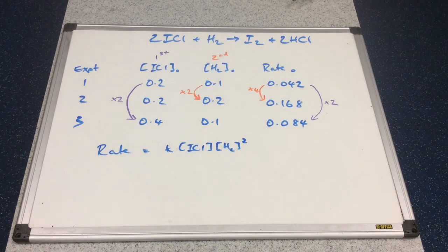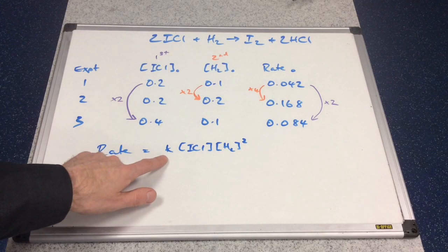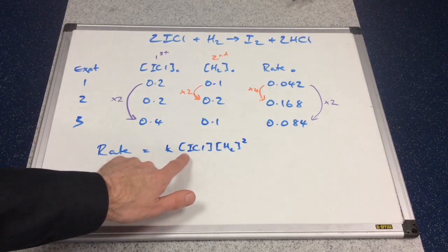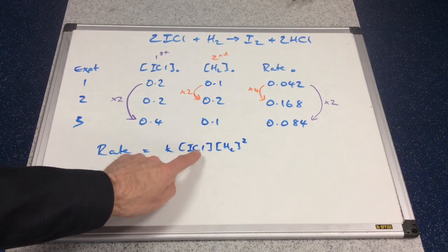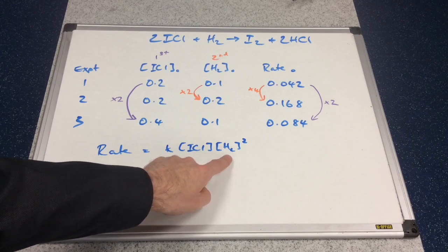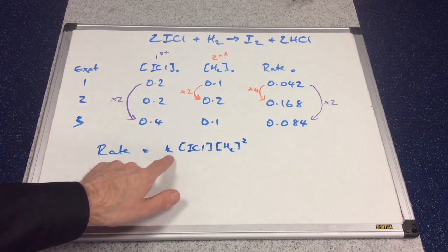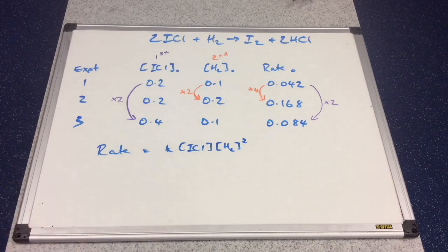Now we know the orders for the reactants, we can write the rate equation: rate equals k (the rate constant) multiplied by the concentration of ICl to the power 1, multiplied by the concentration of hydrogen to the power 2. The next thing is to rearrange and solve for k, and the rearranged equation for k looks like that.